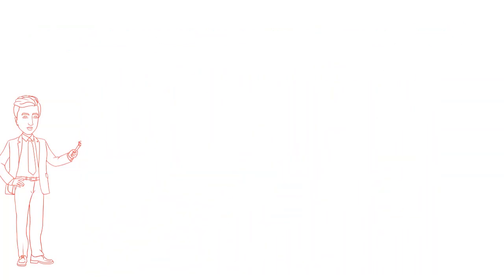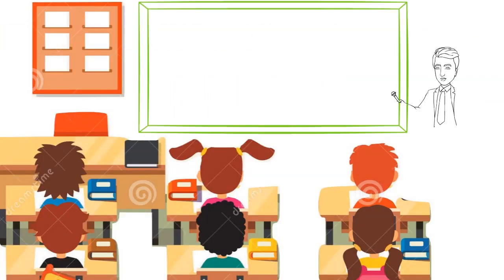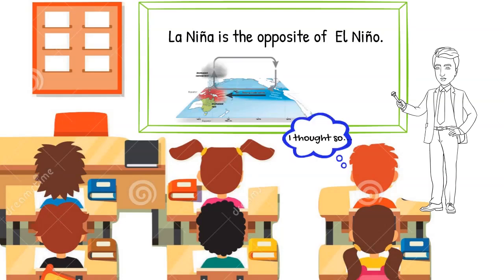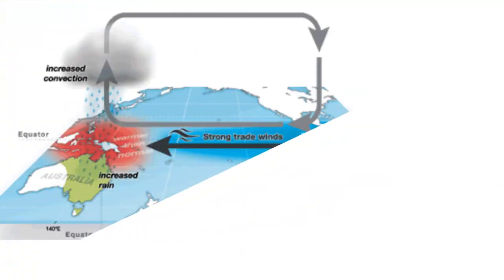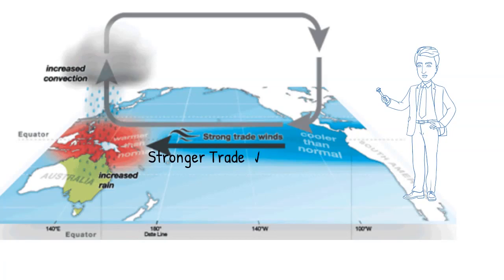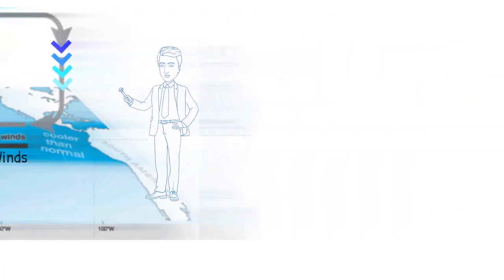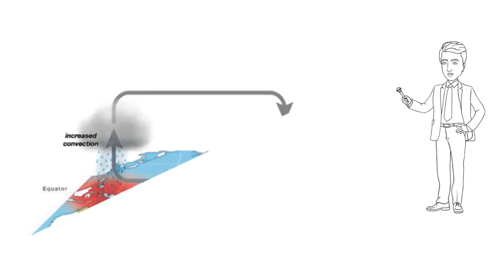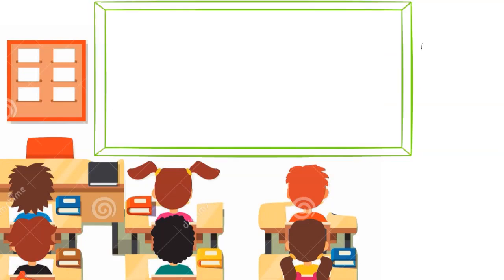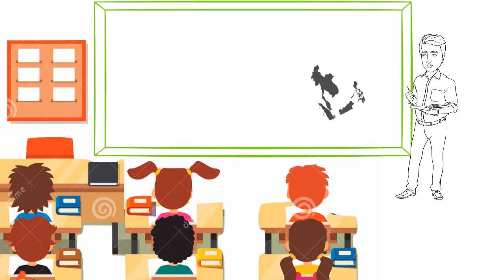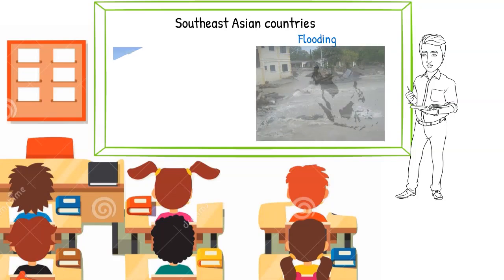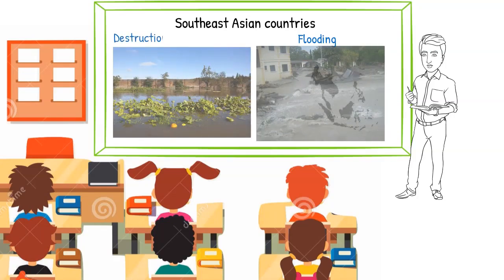The opposite of El Niño is La Niña. During La Niña, trade winds are stronger, pushing more warm water to the western Pacific. This results in an increase in the number of clouds formed, increasing the amount of rainfall in countries such as the Philippines, Malaysia, and Indonesia. Too much rain will cause flooding and destroy crops and homes.